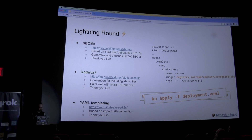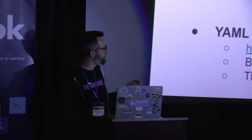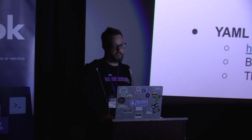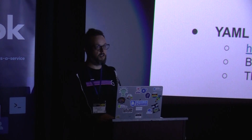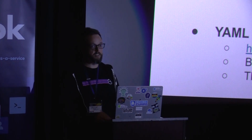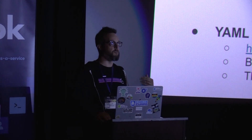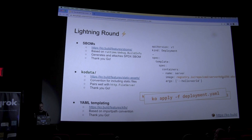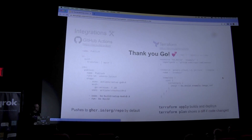There's also ko apply, which is the same thing except it also runs kubectl apply to your cluster. There are even early plans to integrate data from the Go vulnerability database so that when Ko builds an image, it can say: I know there's a vulnerable dependency, I depend on a vulnerable module, but govulndb says I don't call any of the bad functions in there — so I'm going to attach a report that says 'this is fine.' It's not done yet, but we're working on it.